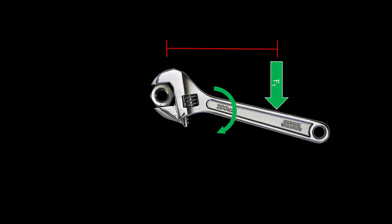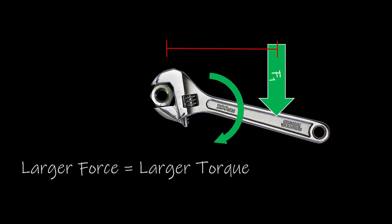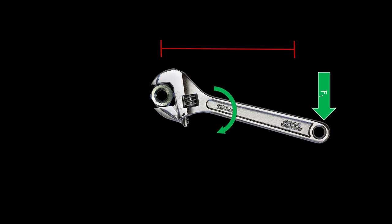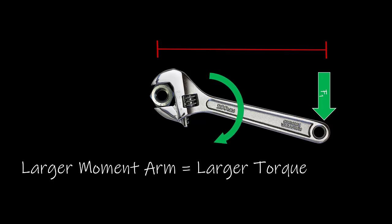Now, how can we increase torque? Well, if we increase the force, we're going to increase the torque, and therefore a larger force equals a larger torque. Next, we can apply that same force but further away from the axis of rotation. This is going to end up increasing the moment arm and will also, therefore, increase the torque. So if we have a larger moment arm, we're also going to have a larger torque.